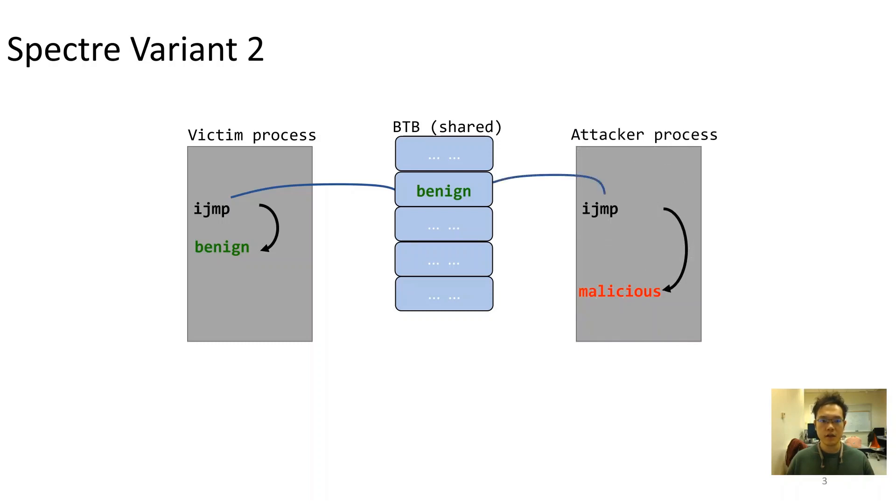As a result, an attacker process executing on the same core can inject malicious entries in BTB by executing branches in his own address space. Next, when victim executes the branch, misprediction will mislead the speculative execution to this malicious address.